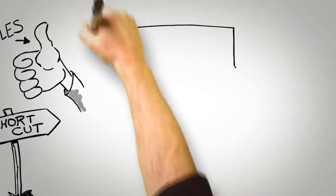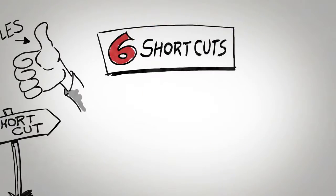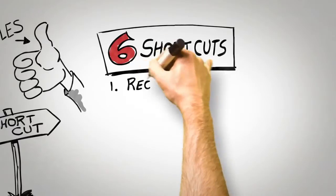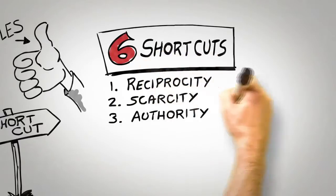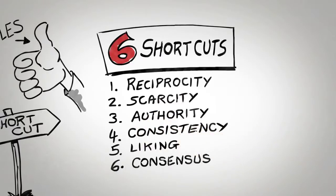My own research has identified just six of these shortcuts as universals that guide human behavior. They are reciprocity, scarcity, authority, consistency, liking, and consensus. Understanding these shortcuts and employing them in an ethical manner can significantly increase the chances that someone will be persuaded by your request. Let's take a closer look at each in turn.